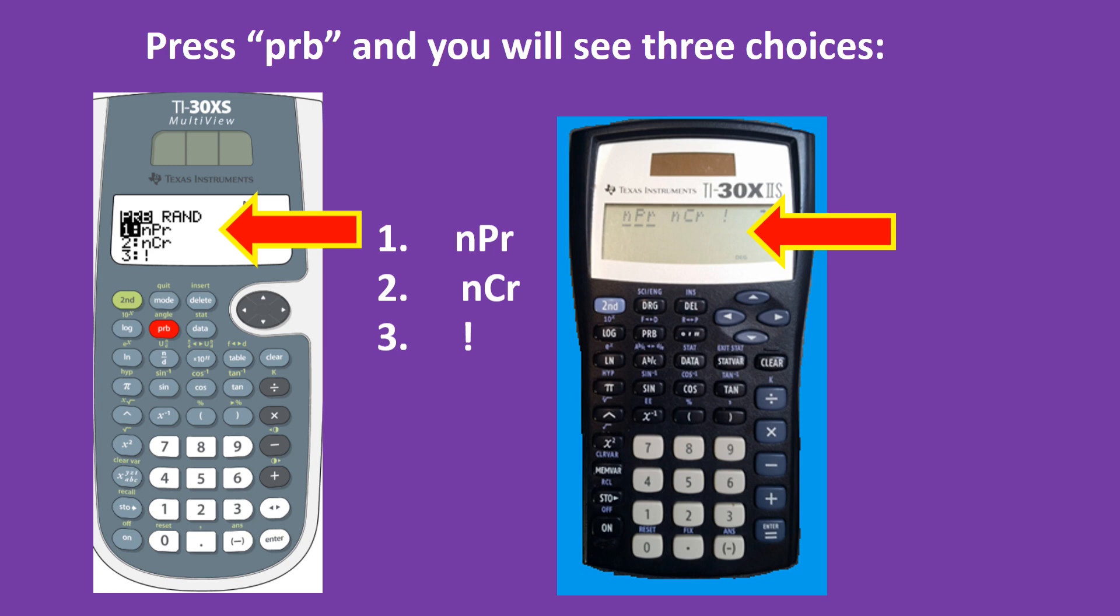The first choice says little n, big P, and little r. So nPr, that's for permutations. The second choice says nCr, that is for combinations. And the third choice shows the symbol for factorial, so you can use that to calculate factorials.